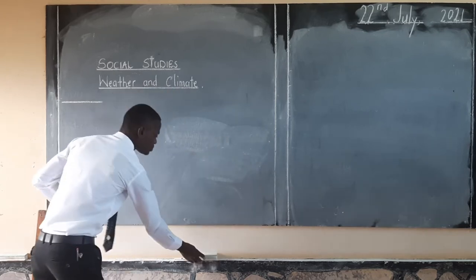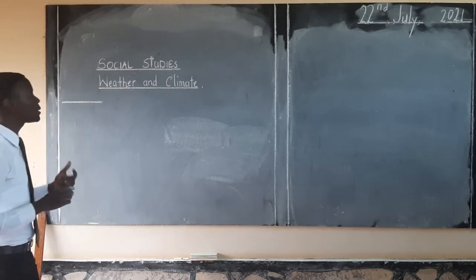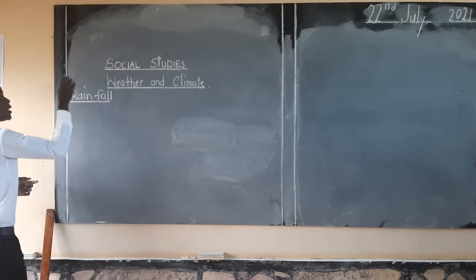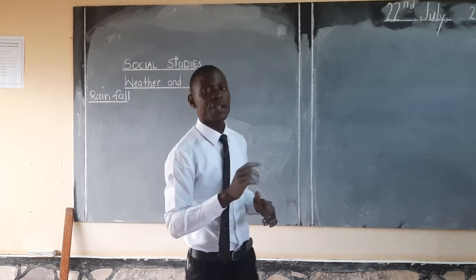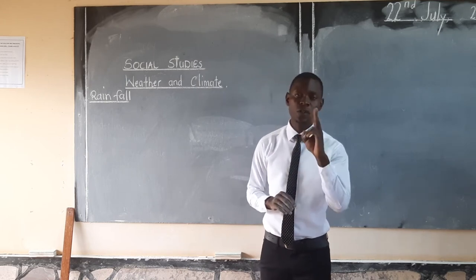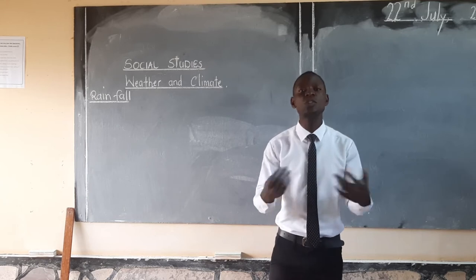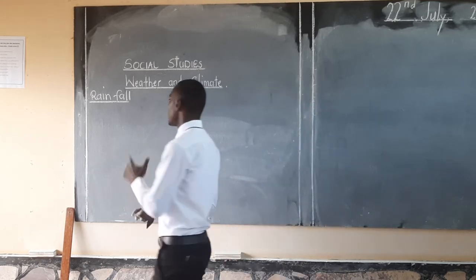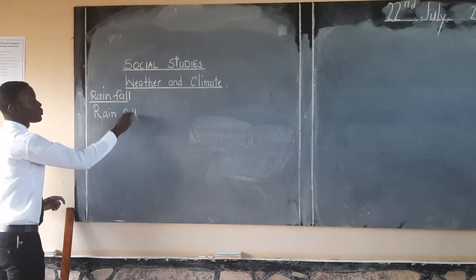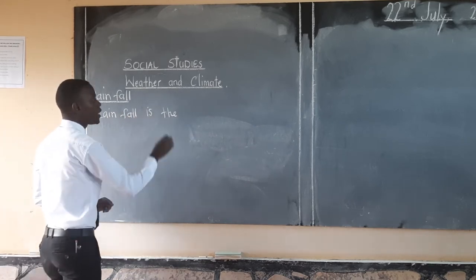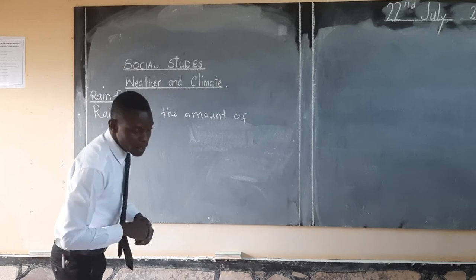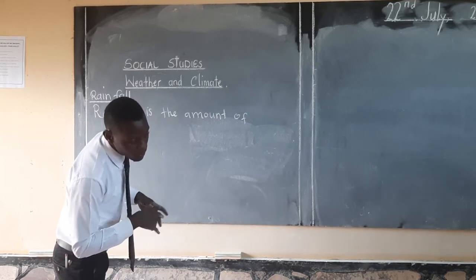Today I'm inviting you to another important lesson where we're going to look at rainfall. We shall look at rainfall. It is important to define what rainfall is. Rainfall is the amount of precipitation in the atmosphere at any given place.